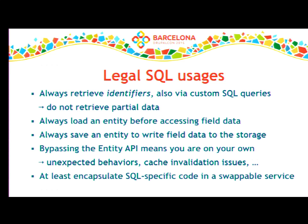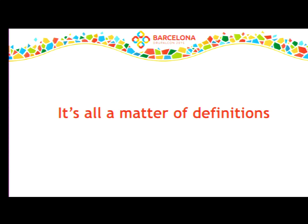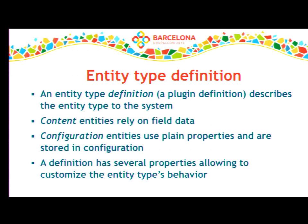A brief recap of entity type definition and field definition concepts. An entity type definition is a way to inform the system that we have a new entity type. It's a plugin — no more, no less, a plugin definition. There was a nice introductory session by Eclipse CC yesterday, so you can have a look at the video. Entity type definitions allow specifying in core mainly two different entity types. We will focus on the first one, content entity types, because those are the ones that are actually fieldable.